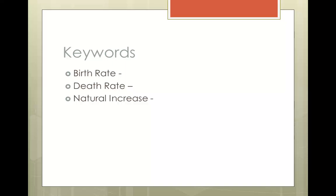The death rate is very similar to the birth rate in that it is again measured per 1,000 people. The death rate is the number of people dying per 1,000 people. When we combine these factors together, we learn what the natural increase is. The natural increase is the difference between the birth rates and the death rates. As long as the birth rate is higher than the death rate, the population will increase.